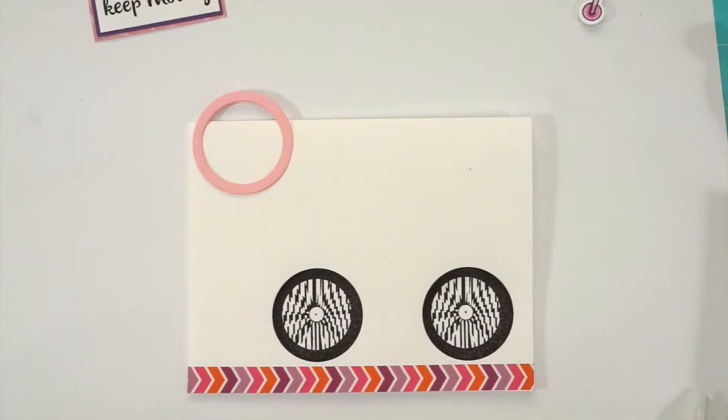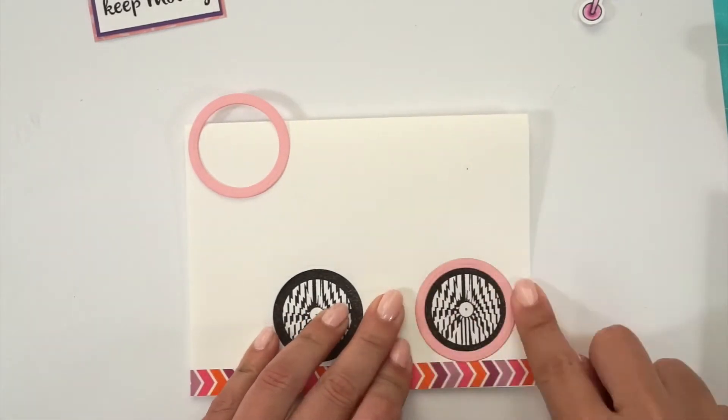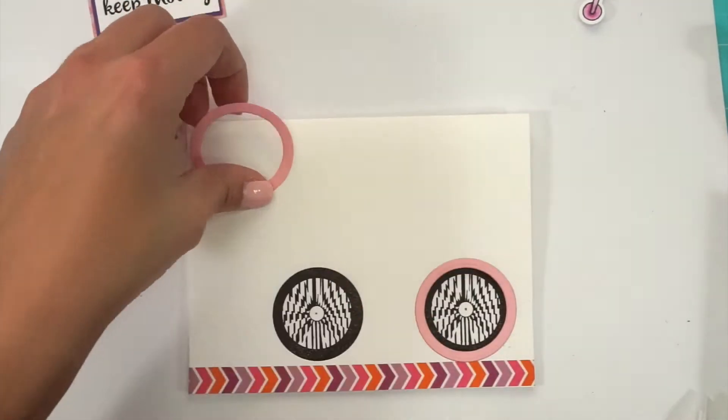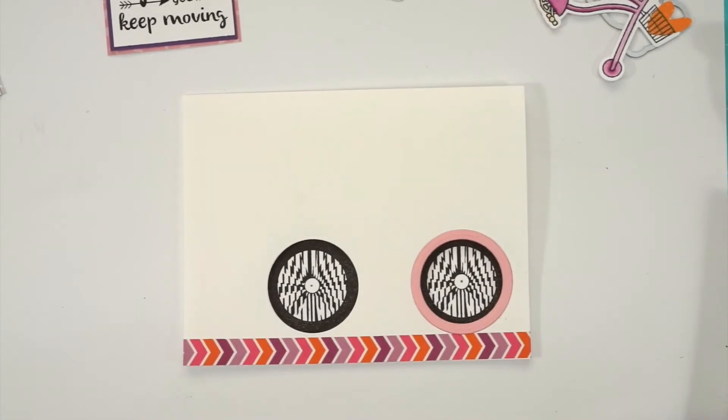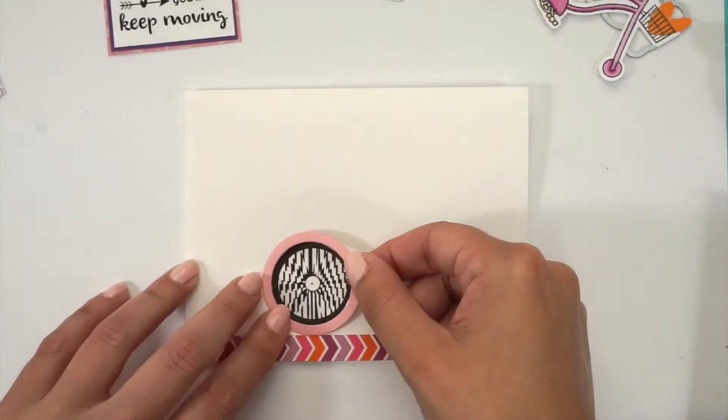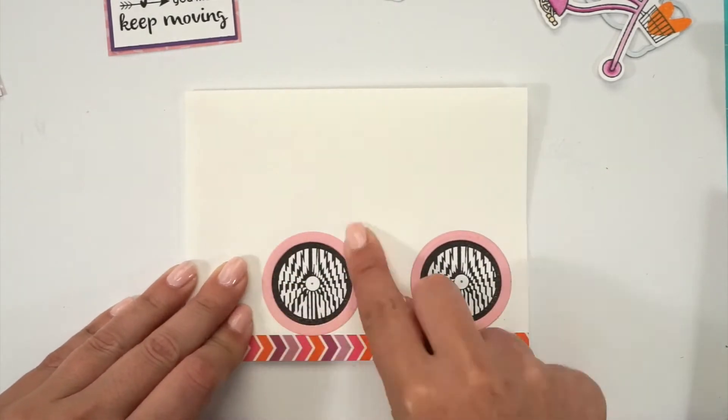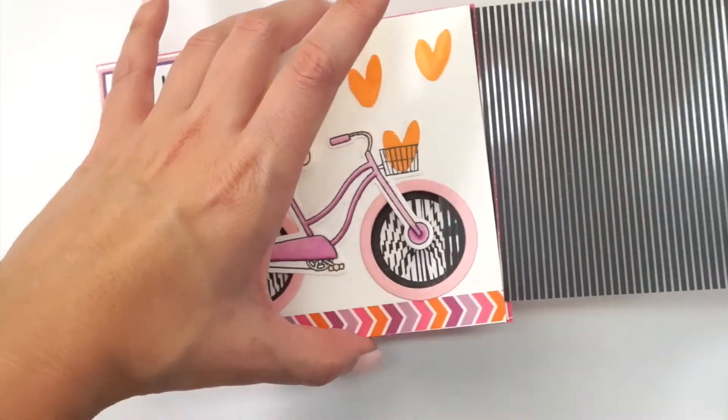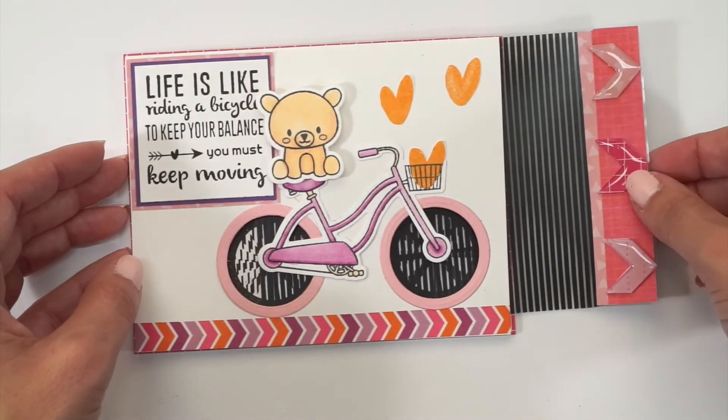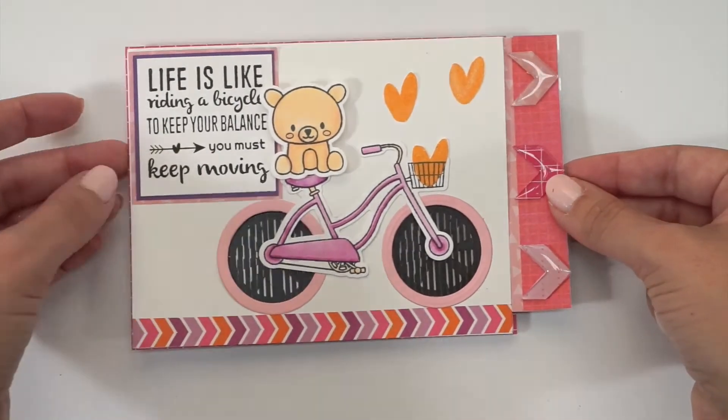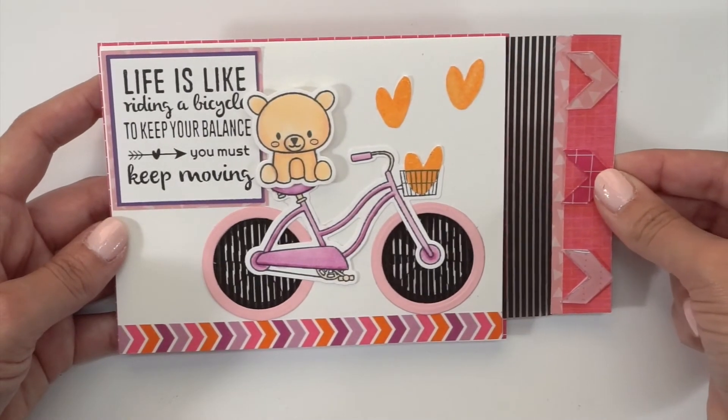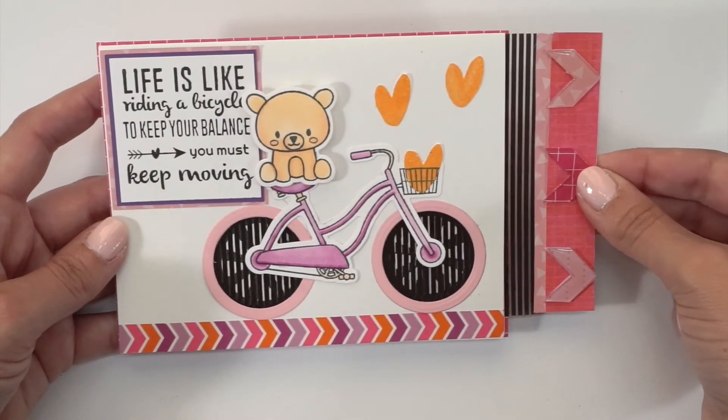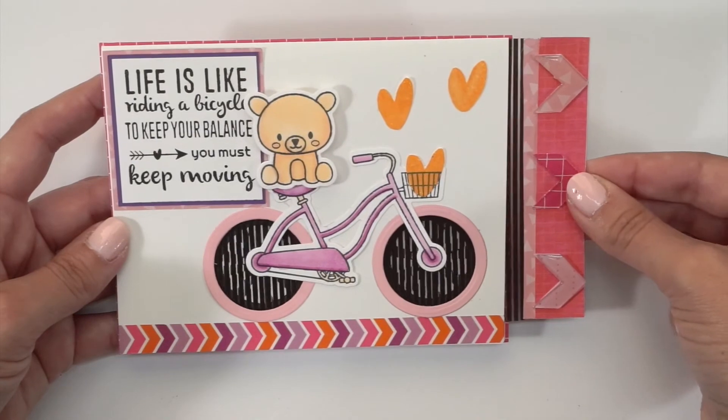So go ahead and glue everything together to complete the card. And here I forgot to keep recording when I was gluing the rest of the things on the card, but everything looks amazing. I just love how the teddy is riding the bicycle and then you can see the animated wheels go back and forth. It's so much fun and so cute. I also love the heart in the basket. So it's a very fun card to make.